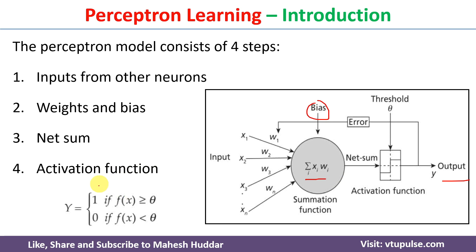Let us assume that the activation function is a step function — there are multiple activation functions, but just for explanation I am considering the step activation function here. In the step activation function, if the calculated sum is greater than or equal to some threshold value, the output will be 1. If it is less than the threshold value, the output will be 0. So based on the activation function, we get different outputs.